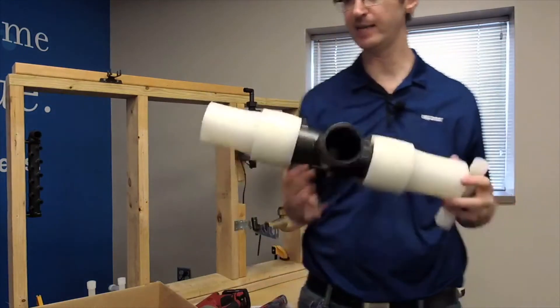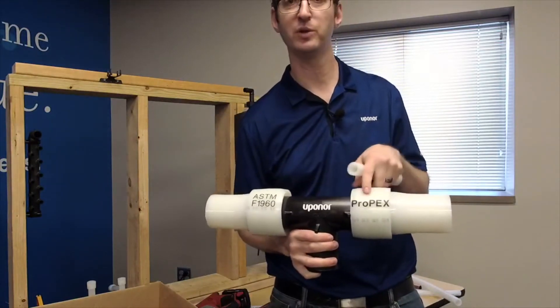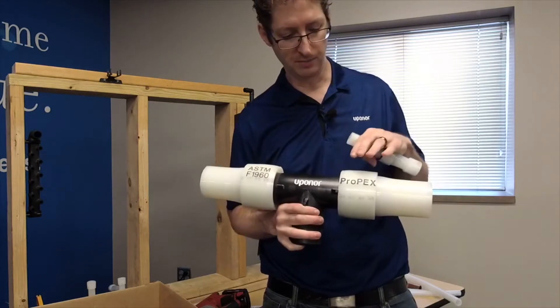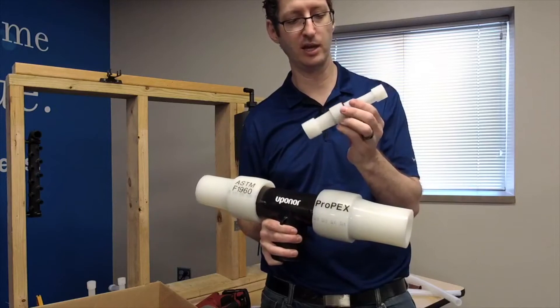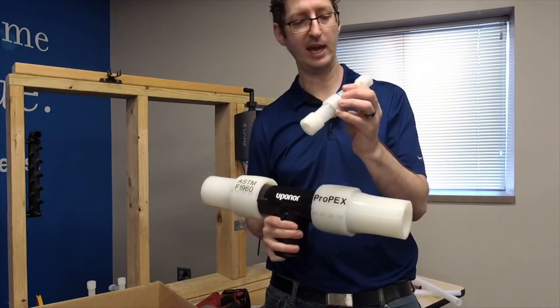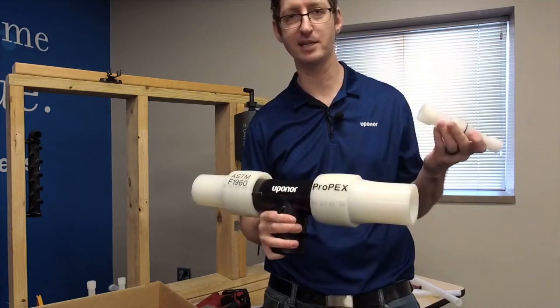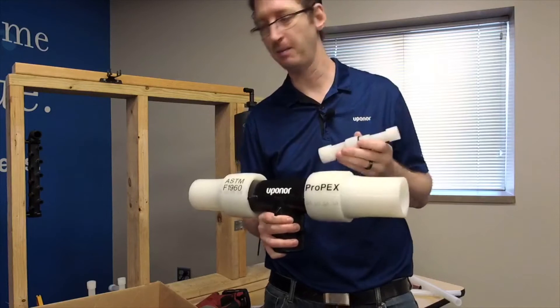So there's an ASTM standard called ASTM F1960, but we more lovingly refer to it as a Propex connection because it's something that we came up with. So the Upanor Propex connection is one of those connections that is foolproof. You really can't dry fit because the fitting is the same size as the pipe. The only way to get the fitting into the pipe is by expanding the pipe and making that work.